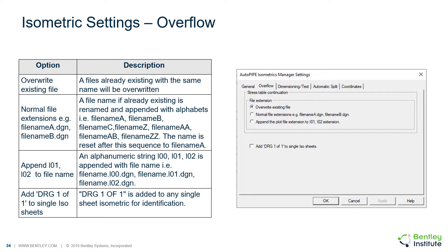On the overflow tab of these settings, you have the option to decide what your file extension looks like. You can overwrite the existing files — if there's a file already existing with the same name, it will just be overwritten. You can select normal file extensions; if a file name already exists, it would be renamed and appended with alpha characters, so file name A, file name B, et cetera.